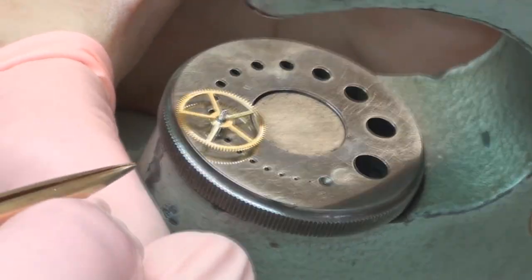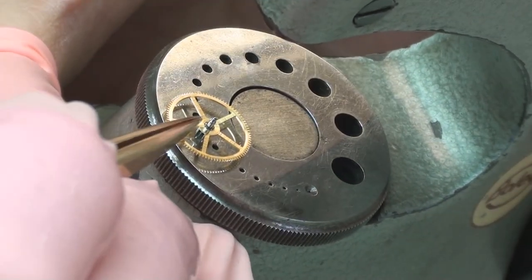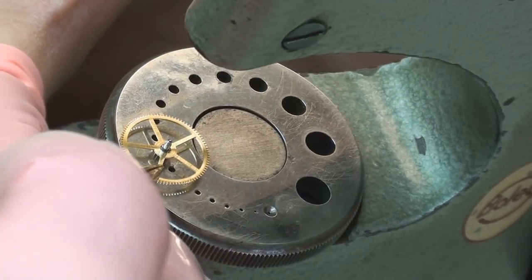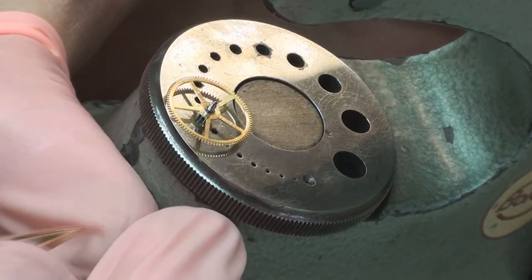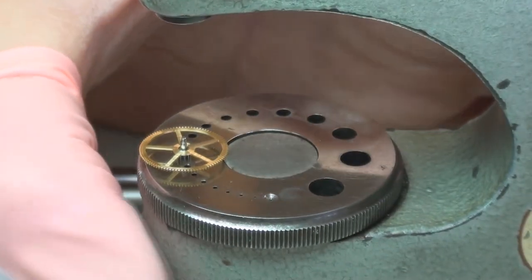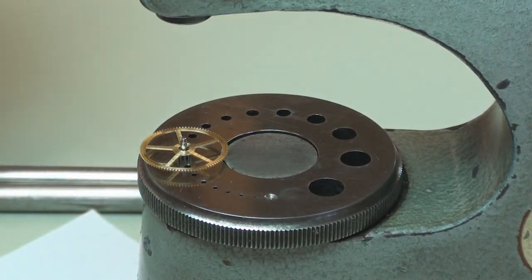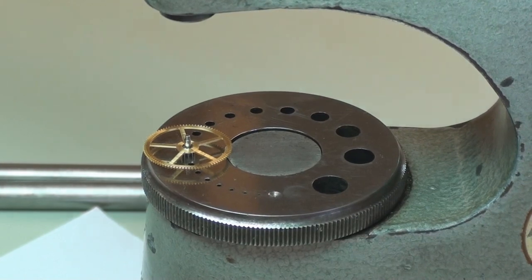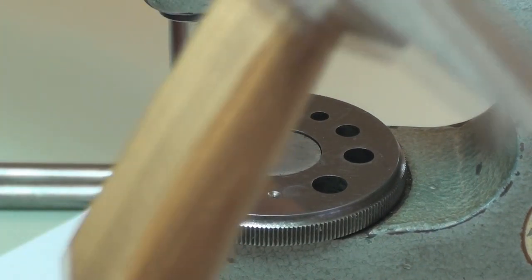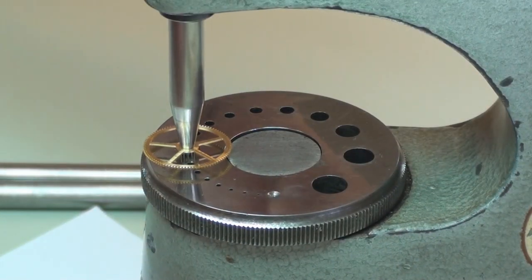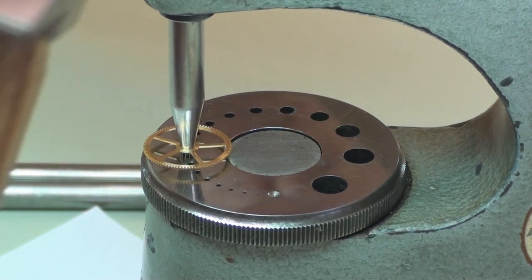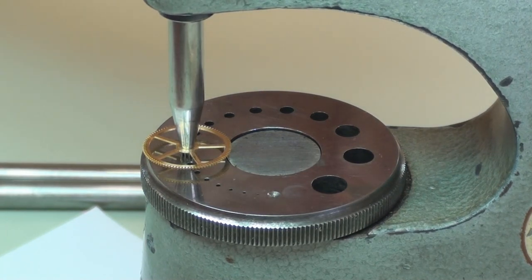So we can just give a quick visual check to make sure that it's properly seated, and then we're ready for the final rivet. So we just choose a smaller punch and give it a swift strike.